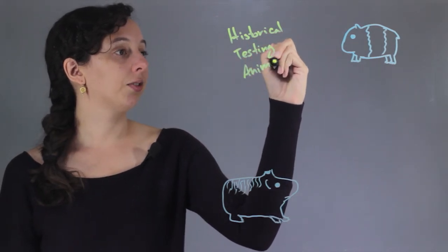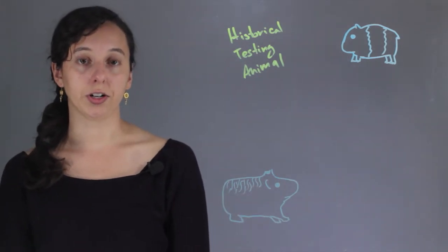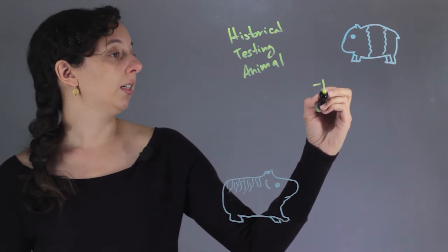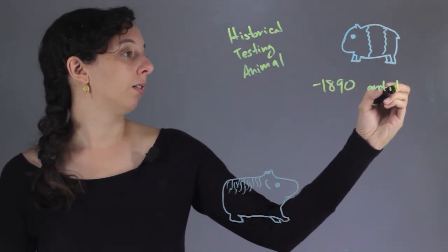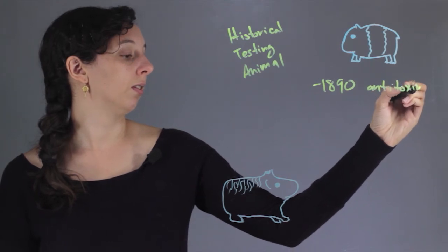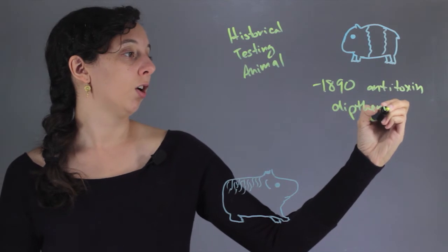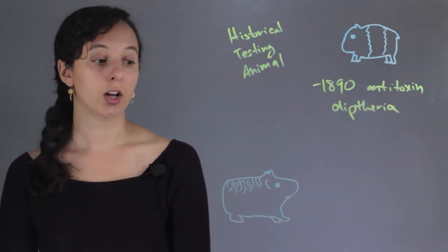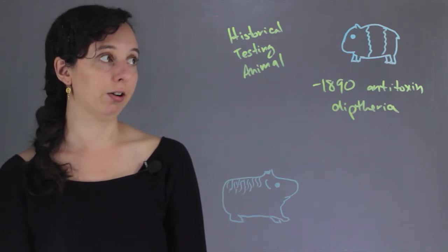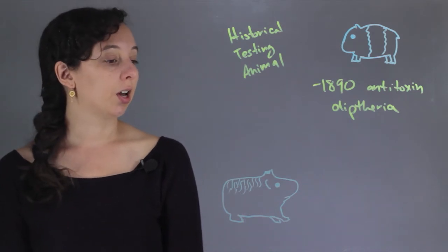And so guinea pigs are the historical testing animal. There's lots of studies that guinea pigs have participated in against their cute little wills. And for instance, in 1890, the antitoxin for diphtheria was discovered, and guinea pigs were used as test subjects. This is just one of the ways that they've helped out. And millions of people, it's estimated, have been saved since this has happened.